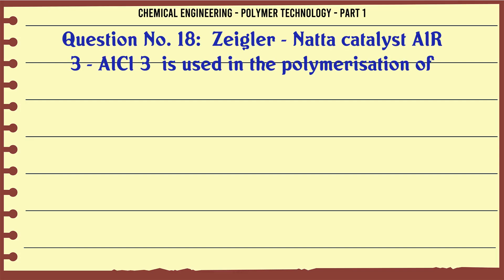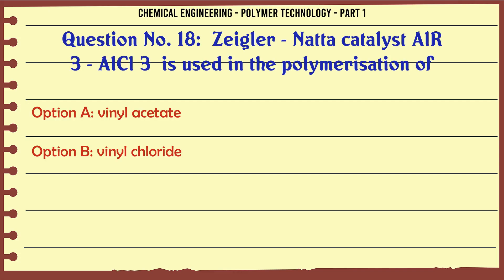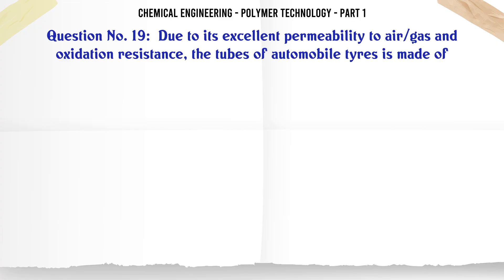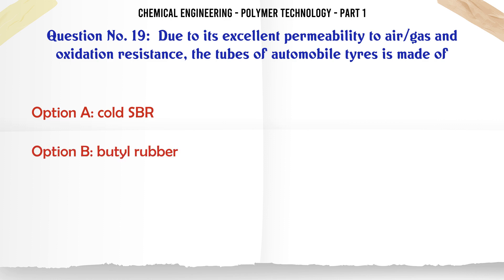Ziegler-Natta catalyst (TiCl3/AlCl3) is used in the polymerization of: A. Vinyl acetate, B. Vinyl chloride, C. Propylene, D. Styrene. The correct answer is Propylene.